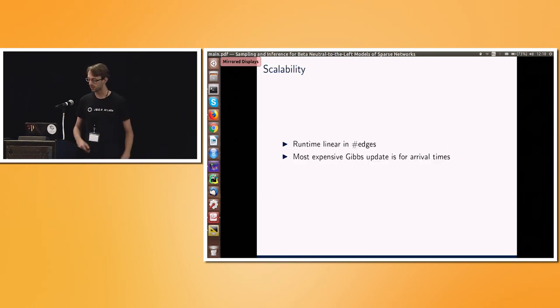Then, in terms of scalability, what we find is the runtime is linear within the number of edges. I'm not going to put up detailed results because I think the message was very clear. And the reason for that is that we have this expensive Gibbs update for the arrival times, and that might be something we could work on in terms of improving the inference further.